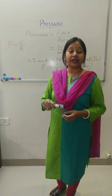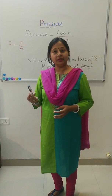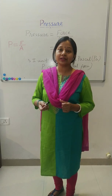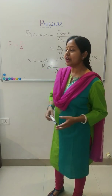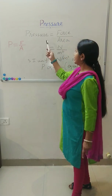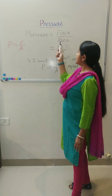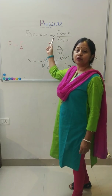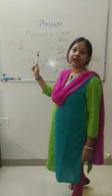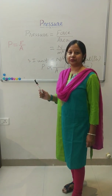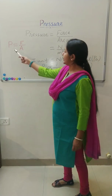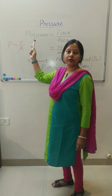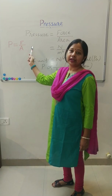Whereas when area is bigger, with the same force, pressure exerted on the object is less. So we conclude that pressure equals force divided by area. We can define pressure as: force acting on unit area is known as pressure. Formula: P equals F upon A, where P stands for pressure, F for force, and A for area.